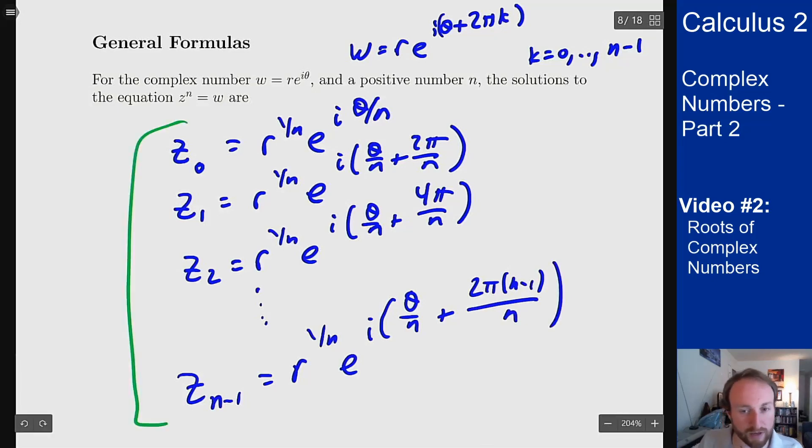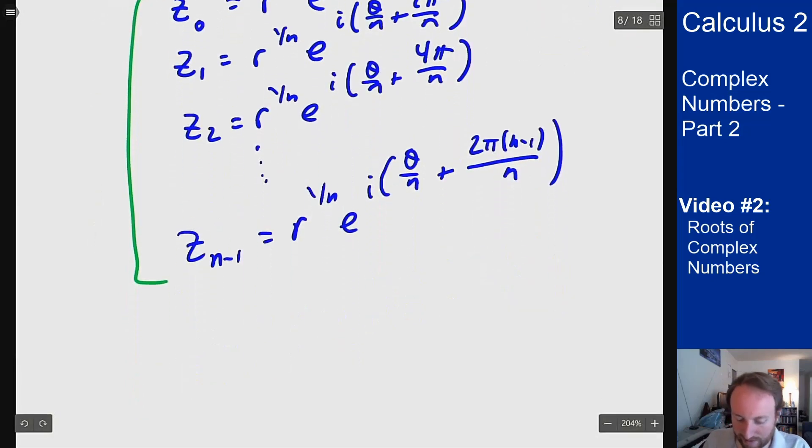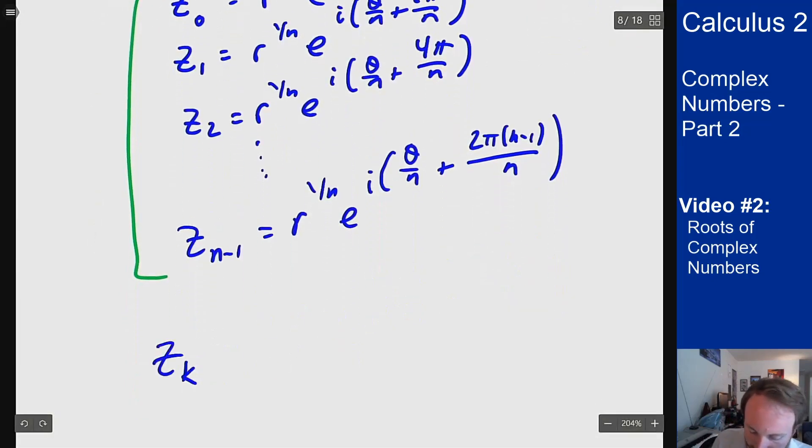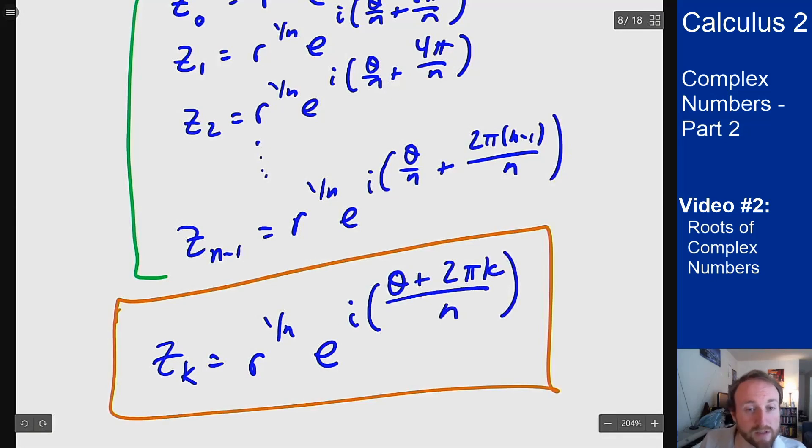If I want to write this out more concisely you could write this as my solutions zk are r to the 1 over n, the modulus there is always the same, times e to the i theta plus 2 pi k over n and those are the nth roots of the complex number w.